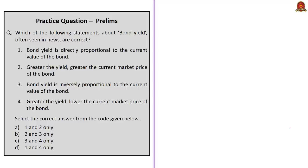With this information, let us take up the given question. Four statements are given and you have to choose correct statements. Statement 1 says bond yield is directly proportional to the current value of the bond — this is incorrect, because bond yield is inversely proportional to the current value of the bond. So you can eliminate options A and D. Greater the yield, lower is the current market price of the bond. The second statement is incorrect and the fourth statement is correct. Therefore, the correct answer is option C, 3 and 4.